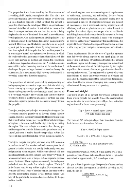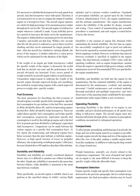Under static conditions, thrust is figured as equivalent to approximately 2.6 pounds per hour. If a gas turbine is producing 4,000 pounds of thrust and the aircraft is traveling at 500 miles per hour, the THP is: 4,000 times 500 divided by 375 equals 5,333.33 THP. It is necessary to calculate the horsepower for each speed of an aircraft since horsepower varies with speed. Therefore, it is not practical to rate or compare the output of a turbine engine on a horsepower basis.